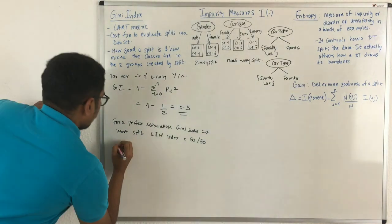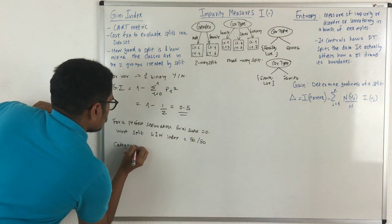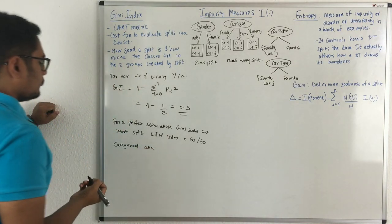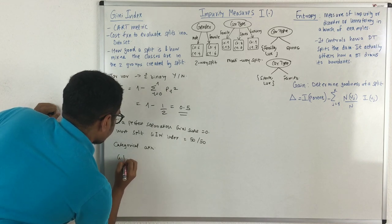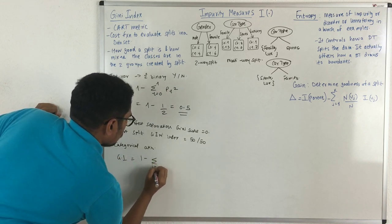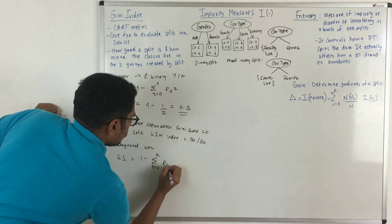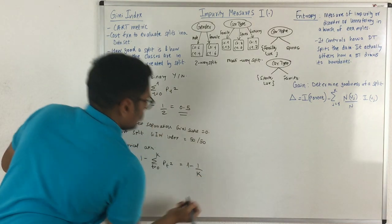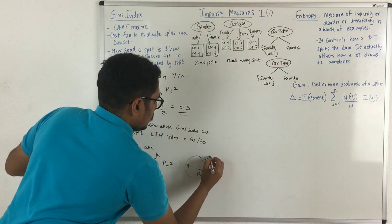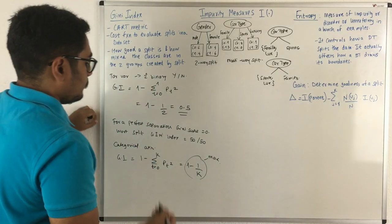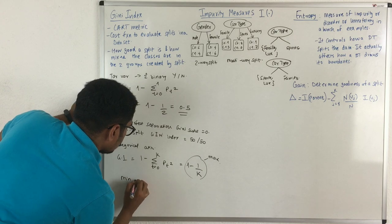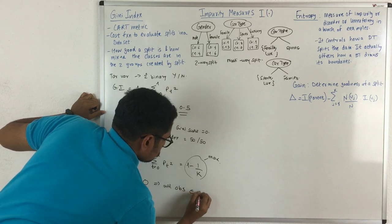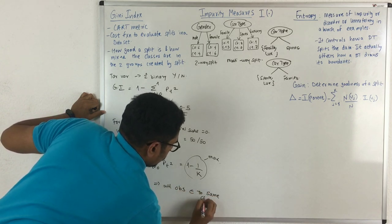For categorical attributes — both nominal and ordinal — the Gini index is given by: 1 minus the summation from t equals 0 to k of p(t) squared, where t is the number of attribute classes. This evaluates to 1 minus 1/k, which is the maximum value for any categorical attribute. The minimum value is 0, which means all records or observations belong to the same class label.